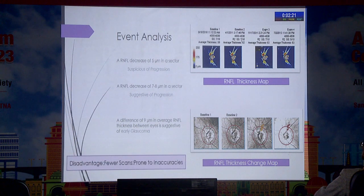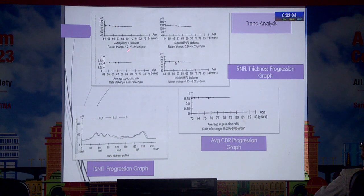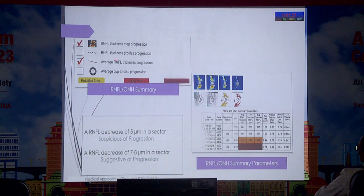One drawback of event analysis is that because of the lesser number of scans it is prone to inaccuracies. In trend analysis, the machine gives a slope where change over a period of time is detected using color coding. It detects superior, inferior, and average RNFL thickness over time and also includes the average CDR progression graph. To summarize: one tick mark denotes focal change, another tick mark denotes broader focal change, and a third denotes diffuse change in RNFL assessment.